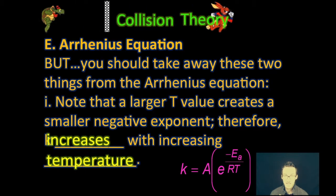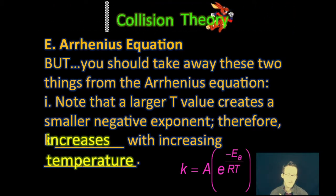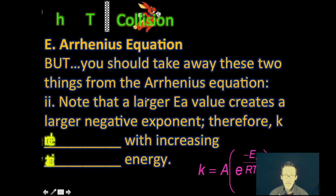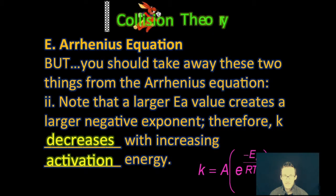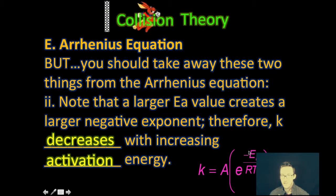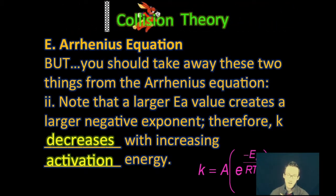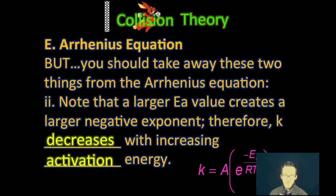Two — a larger activation energy creates a larger negative exponent, therefore your rate constant K decreases with increasing activation energy. In other words, the bigger that hump in your energy profile, the more energy it takes to get over it, and the slower the rate of reaction is going to be.